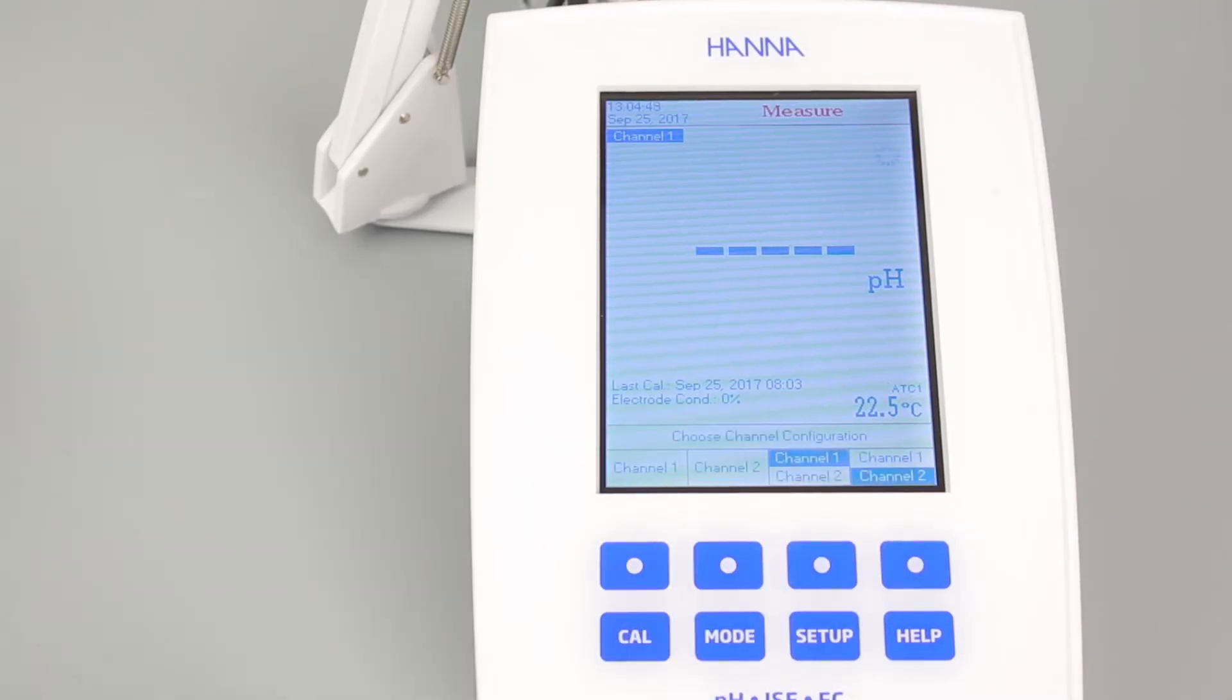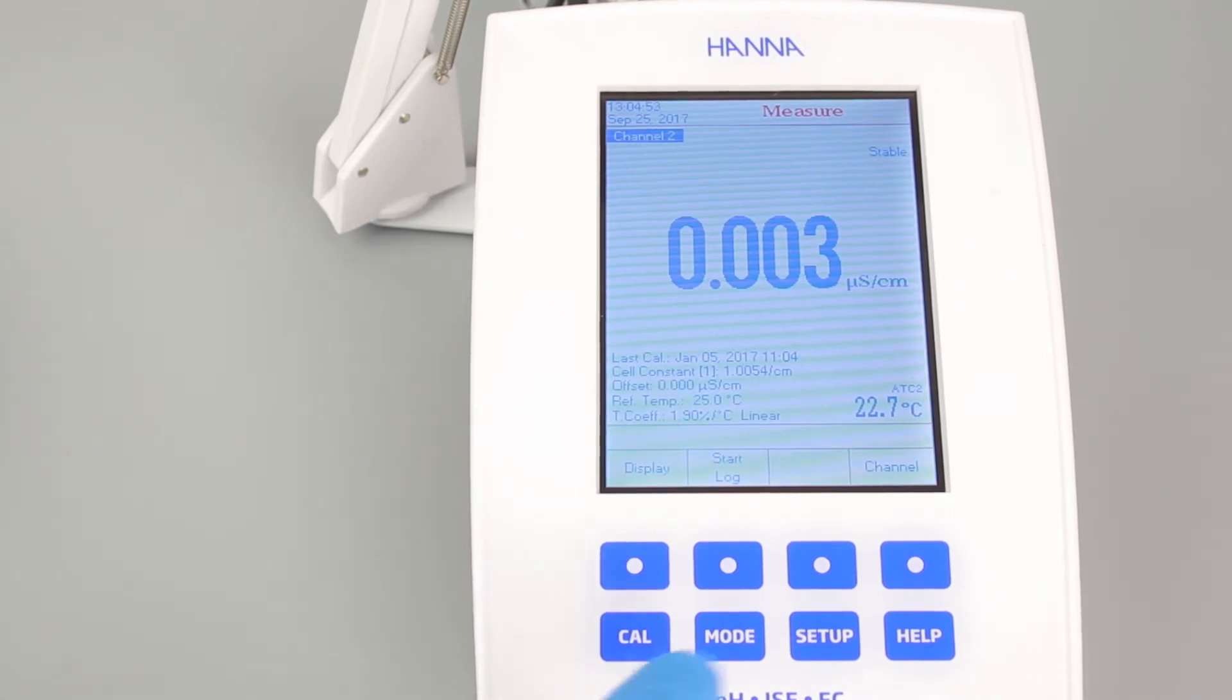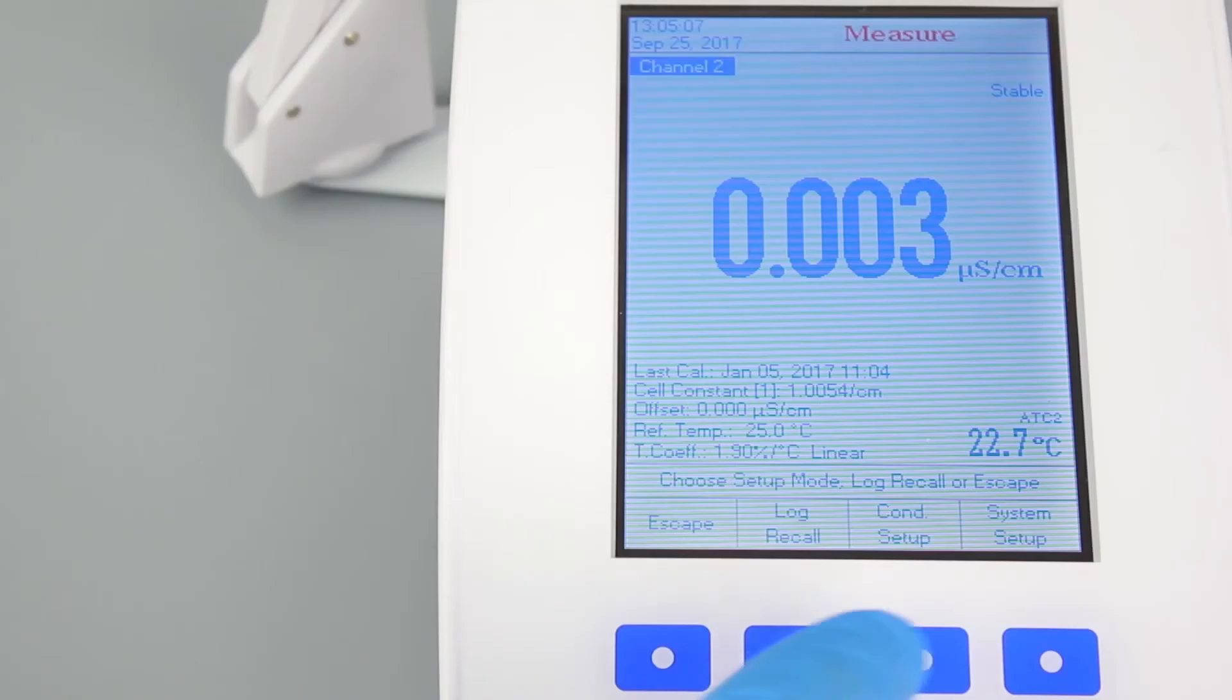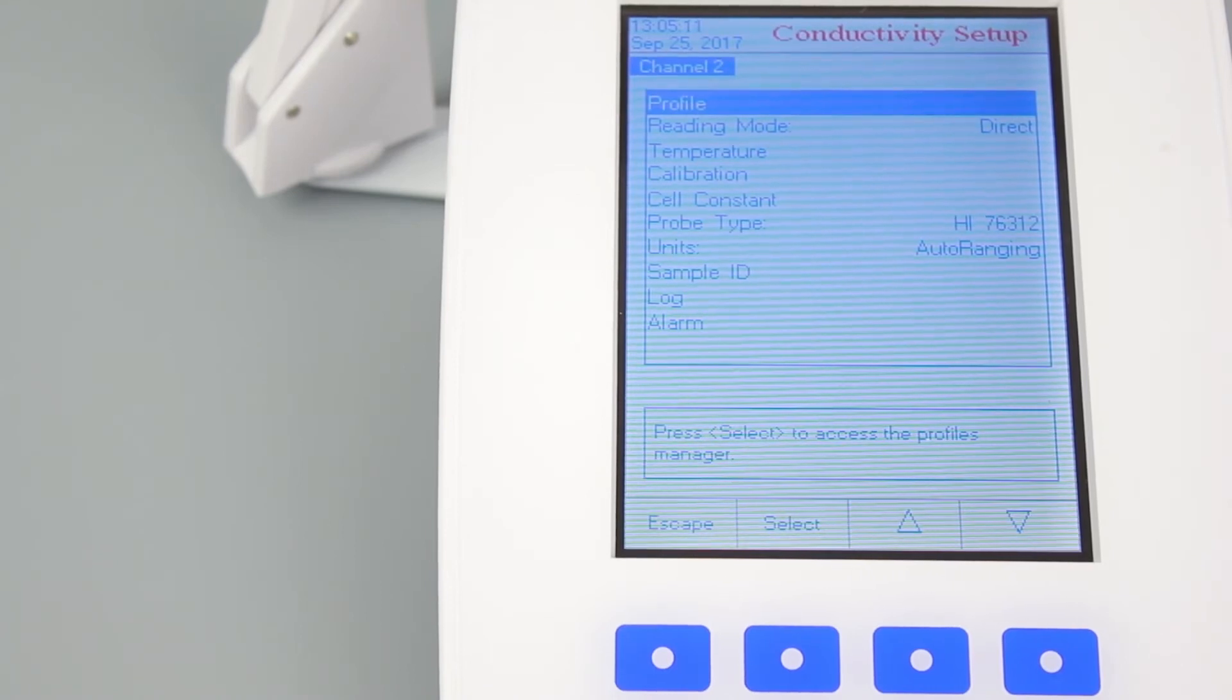You can also view the conductivity setup by selecting the appropriate channel and going into the setup. You will find everything you need to customize your measurements here. With all the options to choose from, I really recommend going through each setting to determine what will be best for you. Once complete, you're ready to begin calibrating your meter.